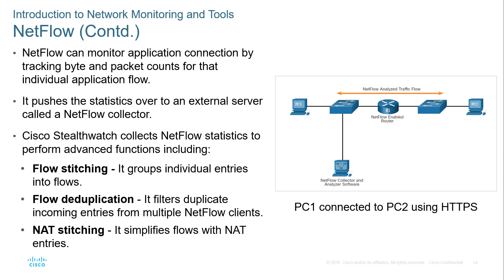NetFlow can monitor applications by tracking data bytes and packet counts for individual application flows, pushing statistics to a NetFlow collector whether internal or external. Cisco also has Stealthwatch collectors that collect NetFlow statistics to perform advanced functions such as flow stitching, duplication, and net stitching. Flow stitching groups interval entries into a single flow; flow duplication filters duplicate incoming entries from multiple NetFlow clients; and net stitching simplifies the flow of net entries. Essentially, we are collecting data statistics so we can analyze them.